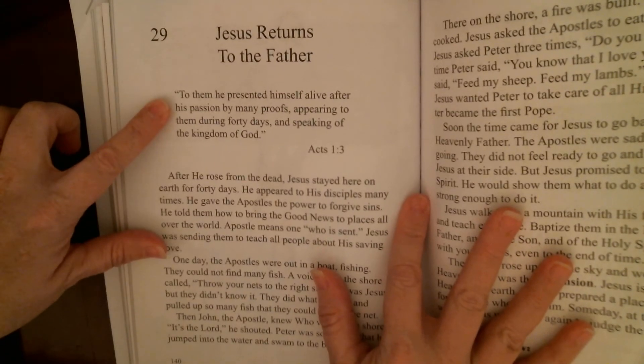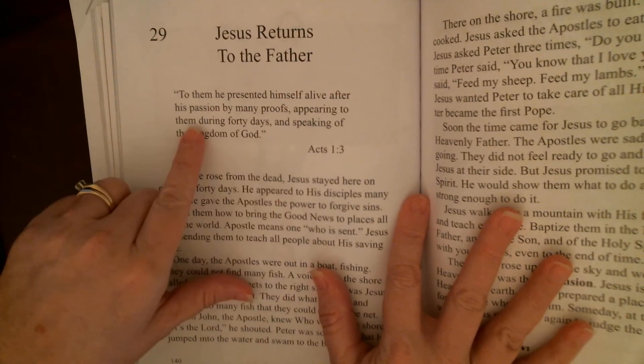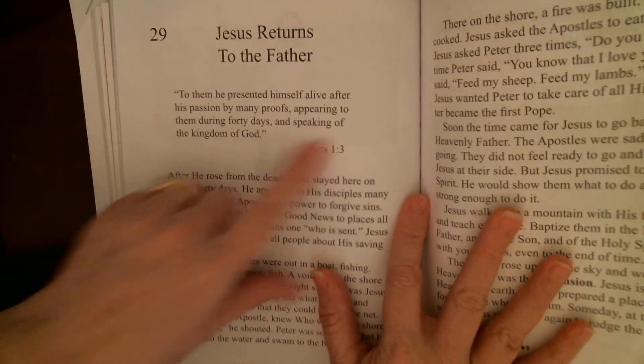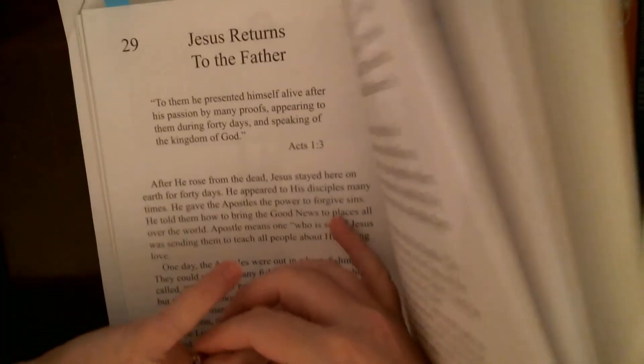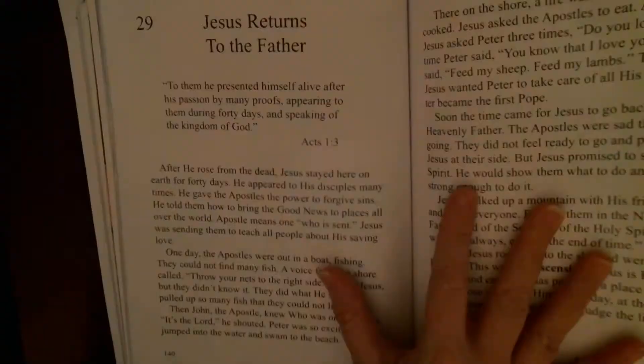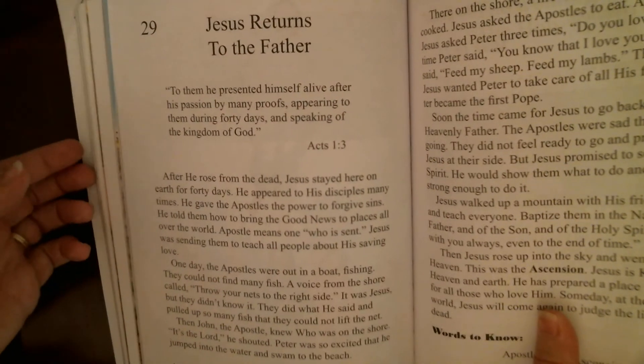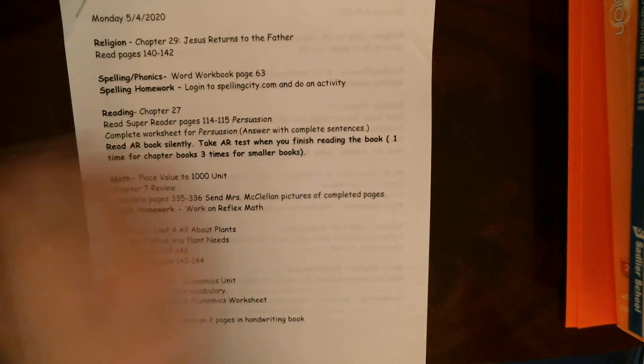To them, he presented himself alive after his passion by many proofs appearing to them during 40 days and speaking of the kingdom of God. So this is all about how after Jesus rose from the dead, he came back to earth and spent 40 days with his apostles and disciples before sending them out. So you're just going to be reading today.